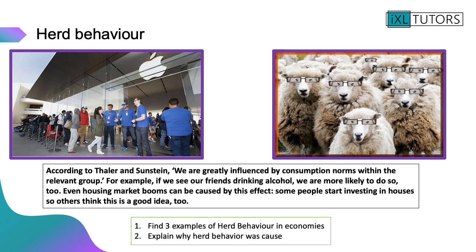Herd behavior is about the influence of consumption norms. We are greatly influenced by consumption norms within a relevant group — for example, if we see our friends doing something, we're more likely to do it as well. The housing market is a really good example: when there's a housing market boom it can be caused by this effect, as some people start investing, others think it's a good idea, and that creates the herd mentality. Find three examples of herd behavior in economies and explain why it was caused.